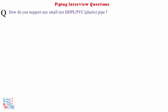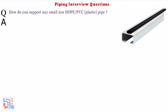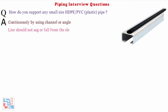Title block details, north direction, flow arrows. Next: how do you support any small size HDPE or PVC (plastic) pipe? It should be supported continuously by using channels or angles so that the line should not sag or fall from the sleeper or rack due to uneven expansion because of hot temperature.